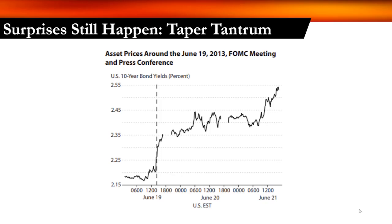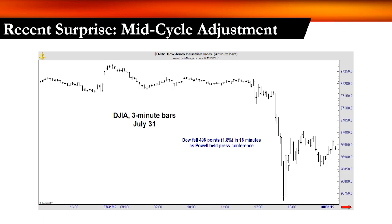Surprises do happen. Bernanke was the subject of a surprise known as the taper tantrum. He basically said he was going to pair back quantitative easing at some point — taper the bond purchases the Fed was doing. Bond prices moved dramatically; yields went from 2.2 to 2.45 over just two days. That's a huge move in this market. Bernanke subsequently backed off, and the market kind of forced him to do that.